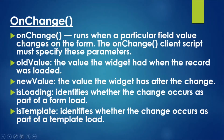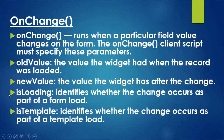The first parameter is oldValue — this is the value the field had when the record was loaded. For example, if a state field was 'Work in Progress' when the record loaded and we change it to 'Pending', then 'Work in Progress' is the old value. The new value is what the field has after the change, so 'Pending' would be the new value.